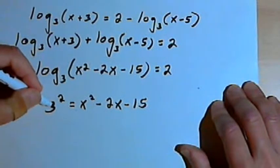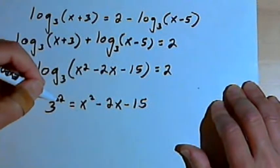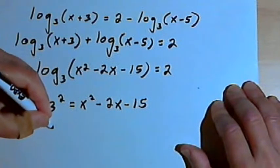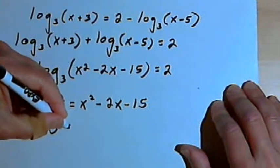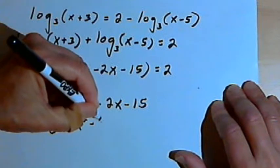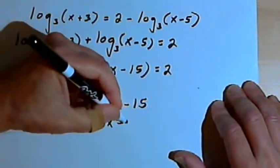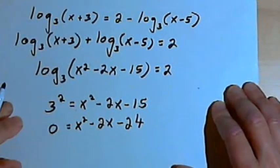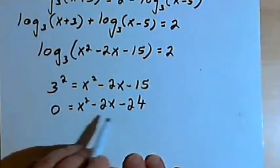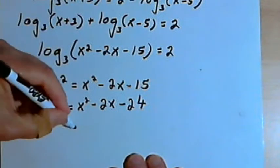And what I want to do is get a zero on one side of the equation. So I'm gonna subtract 9 from both sides. That means I'm going to have zero equals x squared minus 2x minus, let's see, 15 minus 9 is 24. And now I'll factor this x squared minus 2x minus 24.